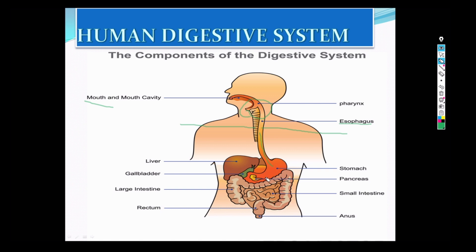From here the food goes into a tubular structure known as the small intestine. It is about 6 to 7 meters long if we keep it straight. In this portion, most of the digestion takes place. For the digestion of fat particles, there is a juice known as bile, which is produced in the liver and stored in the gallbladder. From there the bile juice enters into the small intestine and helps in the digestion of fat.